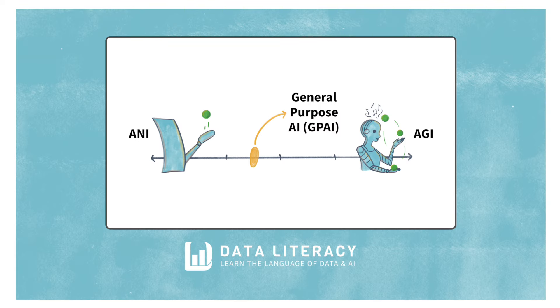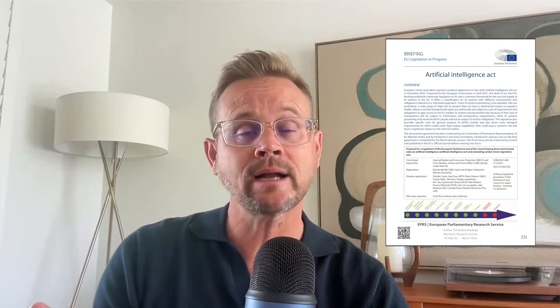Next up we have General Purpose AI, or GPAI. This is a little confusing, because this level also includes the word 'general,' even though it isn't the same thing as Artificial General Intelligence or AGI. This is a newer term — it was introduced in the recently passed European Union AI Act.